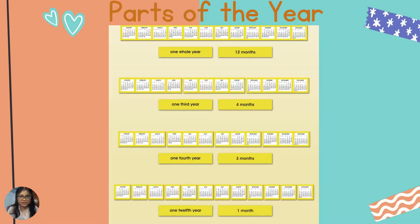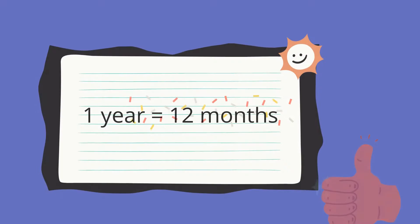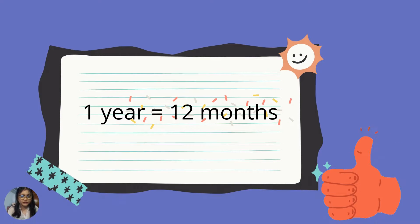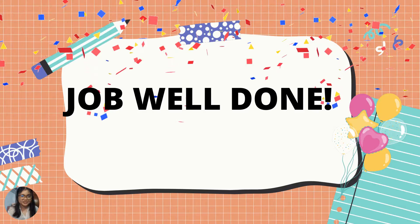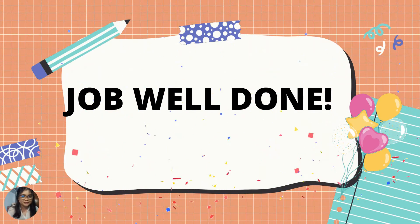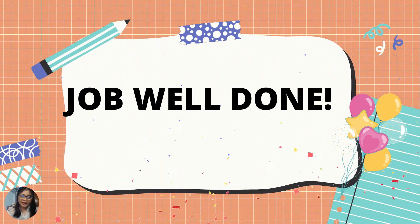I know, my dear pupils, the other week we discussed the months of the year. Today, I hope you understand well the parts of the year. Any questions, or are you confused? Moving on — we have a little recap. Please bear in mind that 1 year is equivalent to 12 months. And we are done. Job well done, my dear pupils. See you next time. Goodbye!